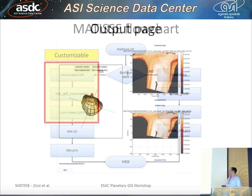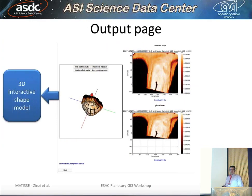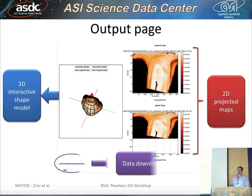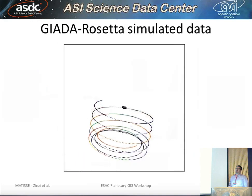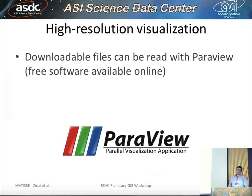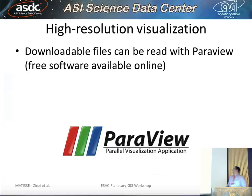This is the output page with the 3D interactive shape model that can be clicked, zoomed, and so on. It also shows the bidimensional projected maps and the possibility to download data. This is the output for the JADA-Rosetta simulated data — points scattered all around the comet along the JADA orbit. These are simulations, not real data.